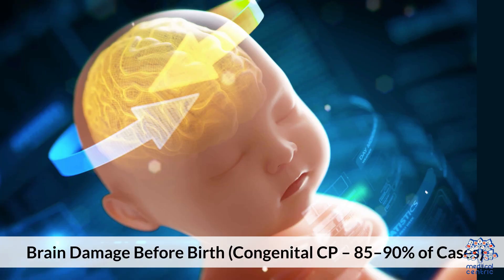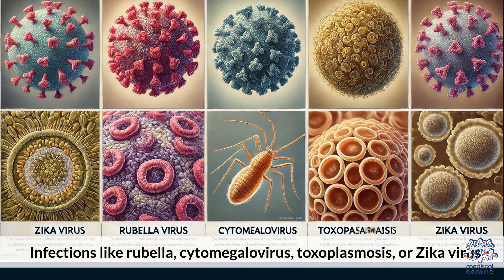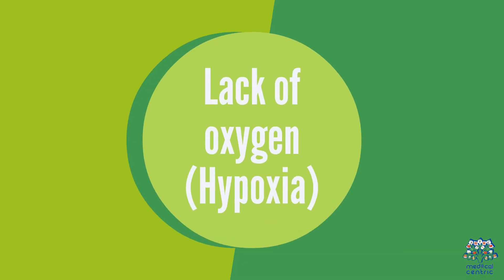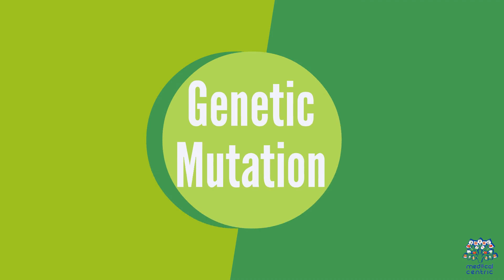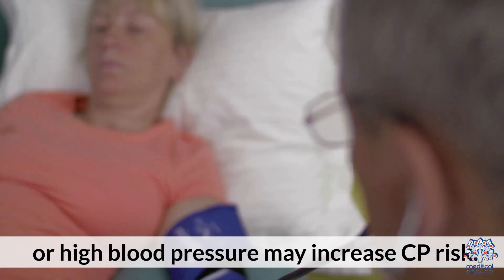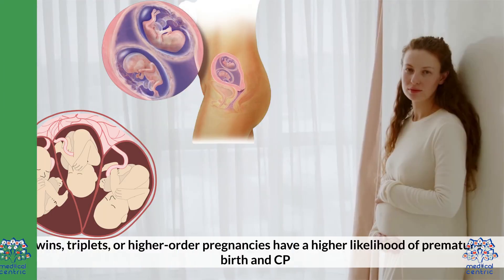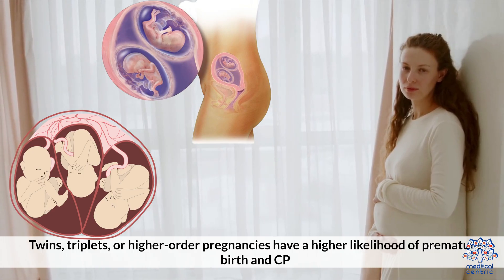Brain damage before birth, known as Congenital CP, accounts for 85–90% of cases. Prenatal infections such as rubella, cytomegalovirus, toxoplasmosis, or Zika virus can affect fetal brain development. Lack of oxygen, or hypoxia, during pregnancy can also cause damage. Genetic mutations or high blood pressure may increase CP risk. Multiple births — twins, triplets, or higher-order pregnancies — have a higher likelihood of premature birth and CP.